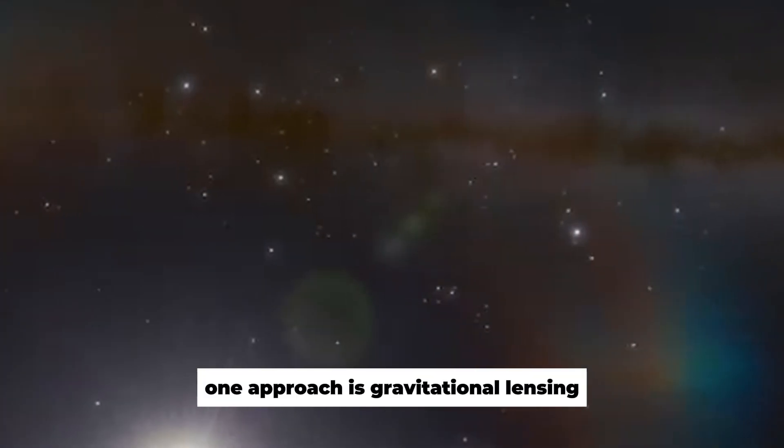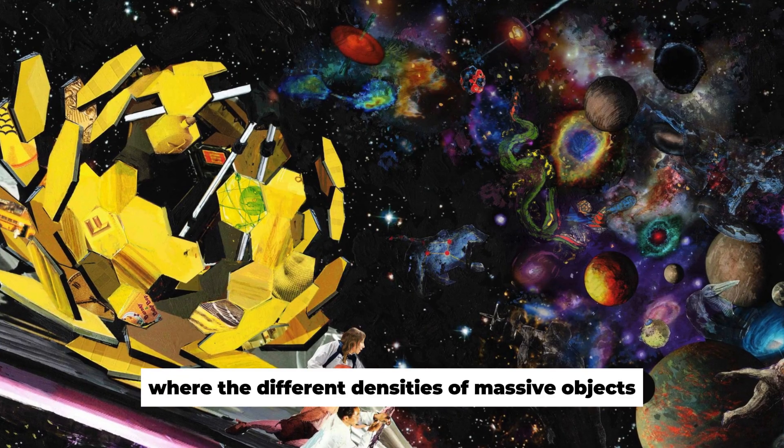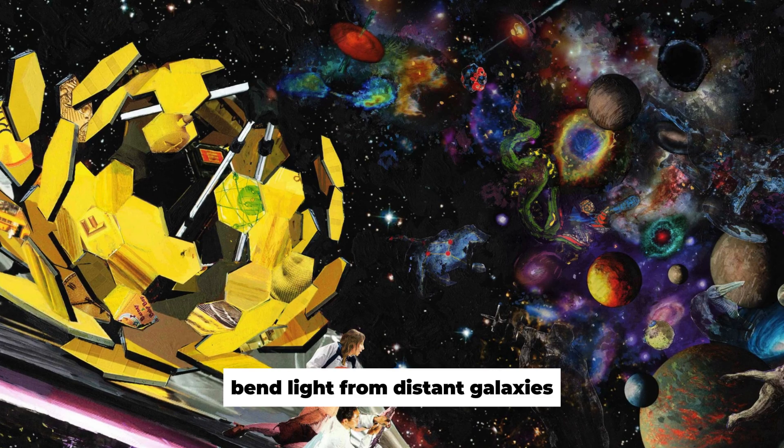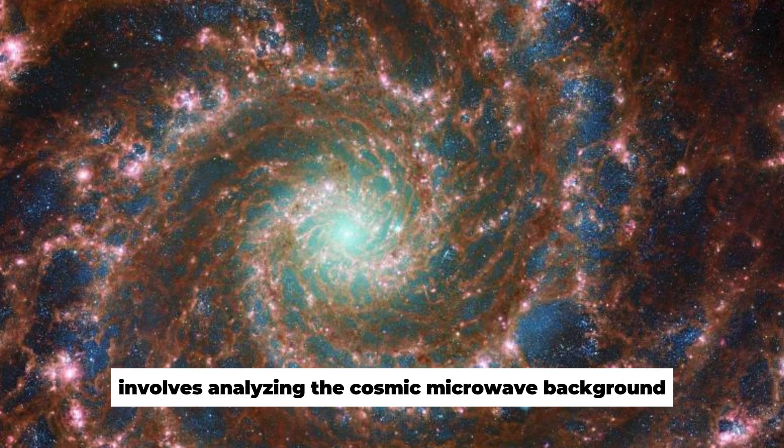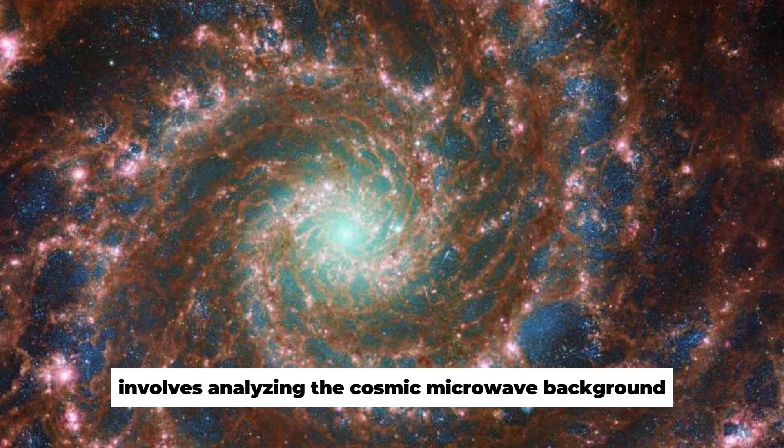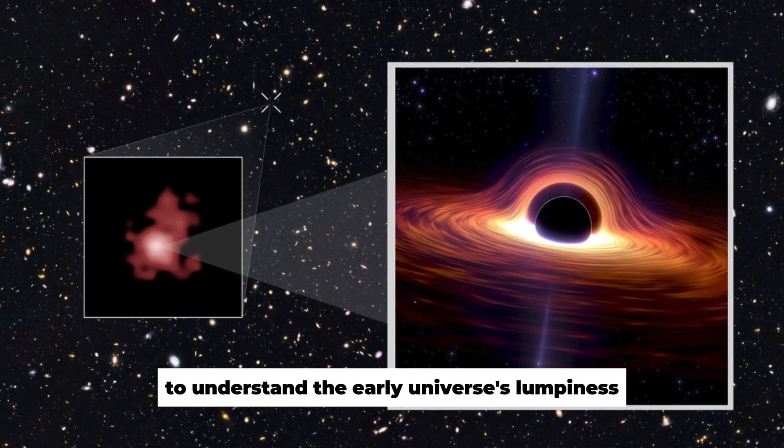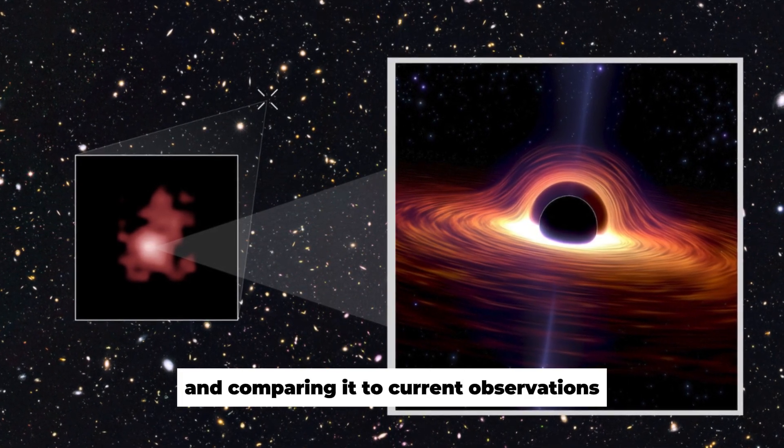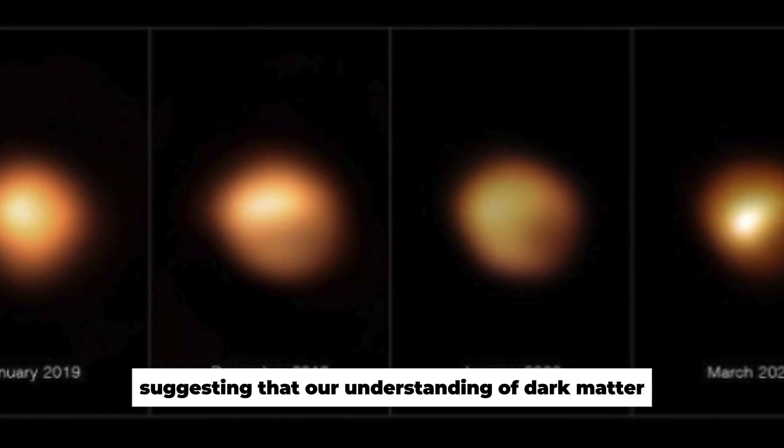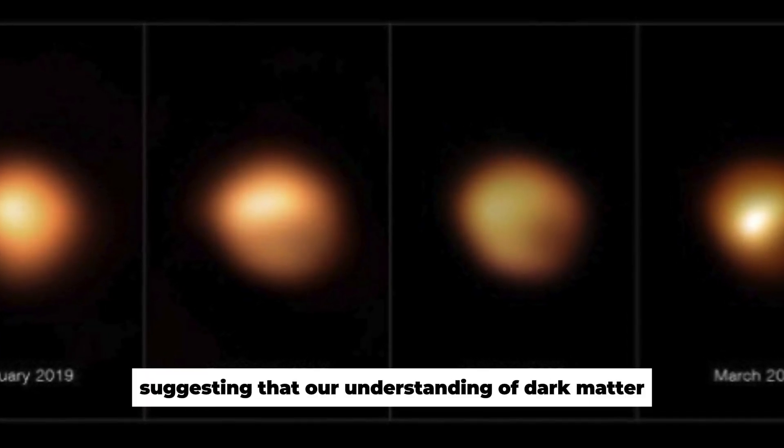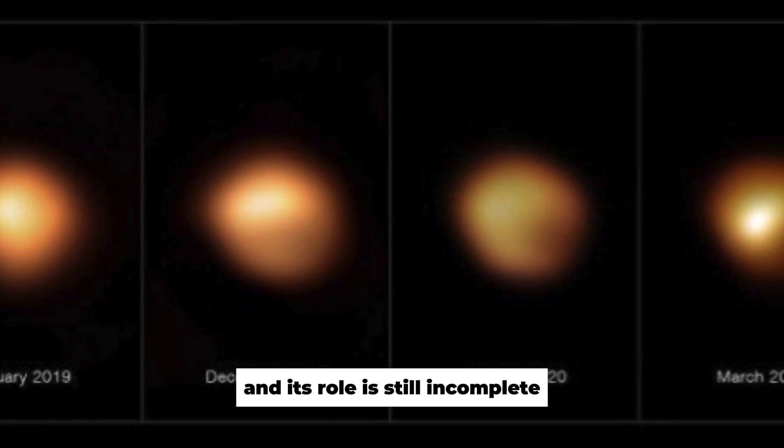One approach is gravitational lensing, where the different densities of massive objects bend light from distant galaxies, revealing dark matter. Another method involves analyzing the cosmic microwave background to understand the early universe's lumpiness and comparing it to current observations. These analyses reveal discrepancies, suggesting that our understanding of dark matter and its role is still incomplete.